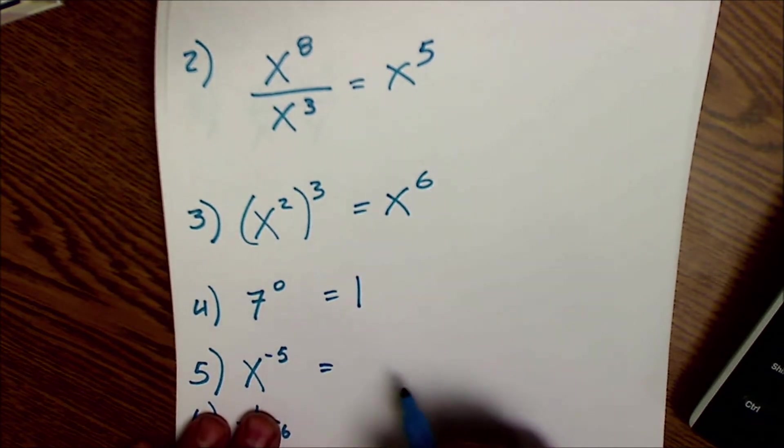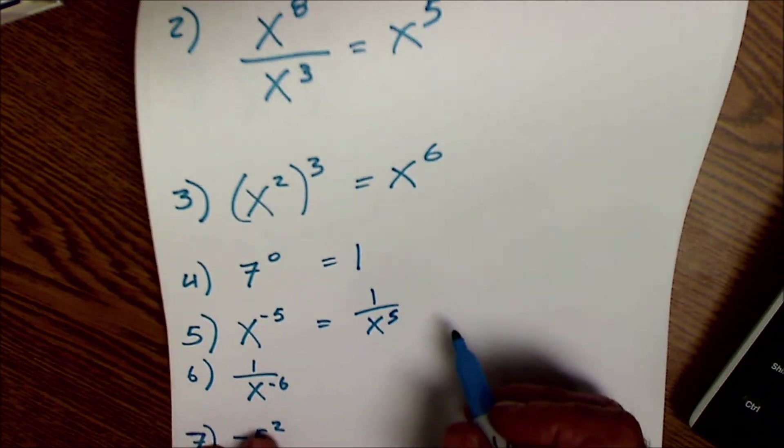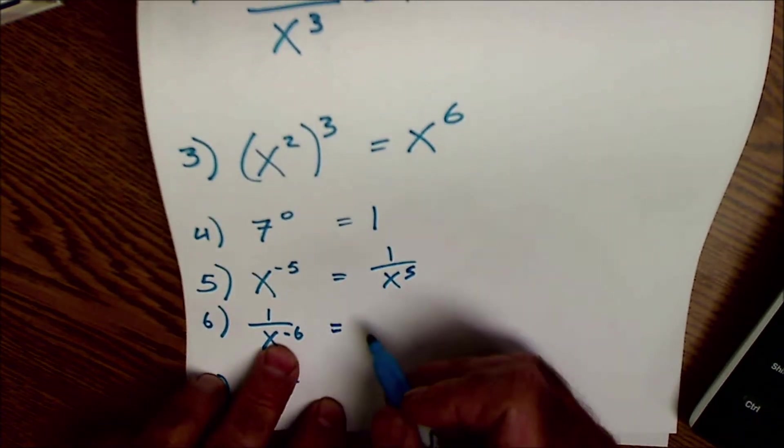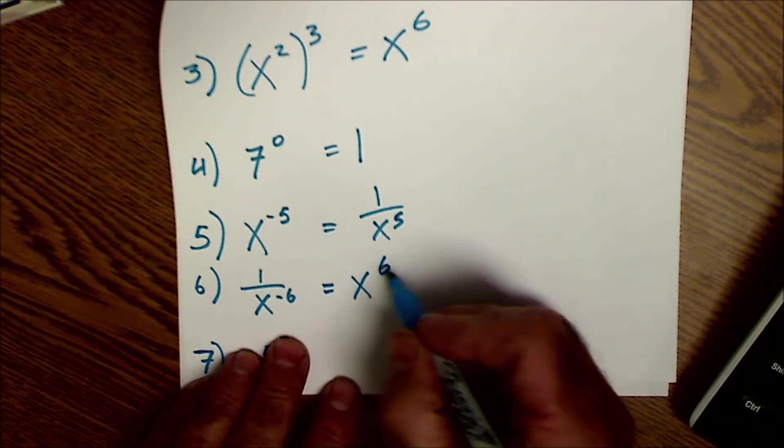x to the negative 5 is going to be 1 over x to the fifth. 1 over x to the negative 6, we're going to make that positive by moving it up. So that's just x to the sixth.